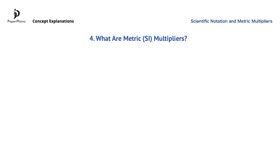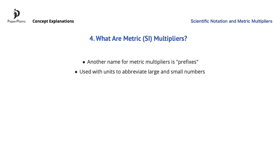Let's continue with metric, or SI multipliers. Note that another name for metric multipliers is prefixes. Metric multipliers are used with units, and similarly to scientific notation, they help abbreviate large and small numbers. Let's see a few examples of metric multipliers.